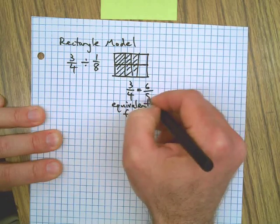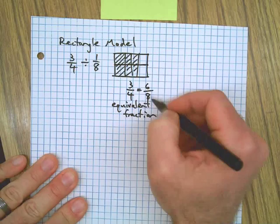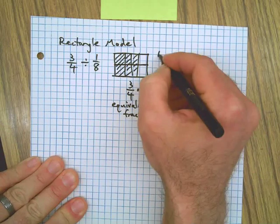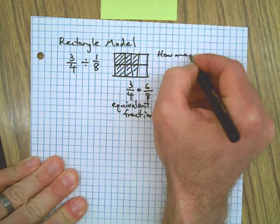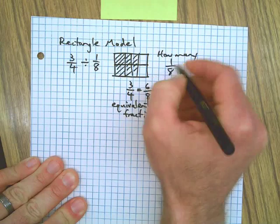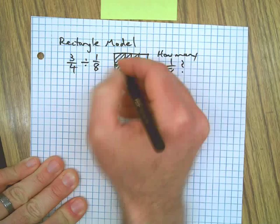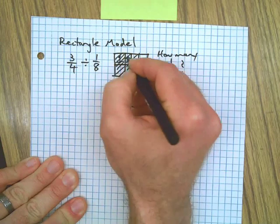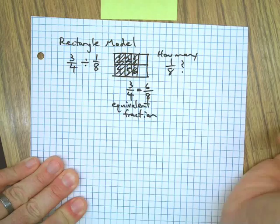But now that I have eighths, I can ask how many 1/8s are in there, and you can see 1, 2, 3, 4, 5, 6. That proves our work from the other page.